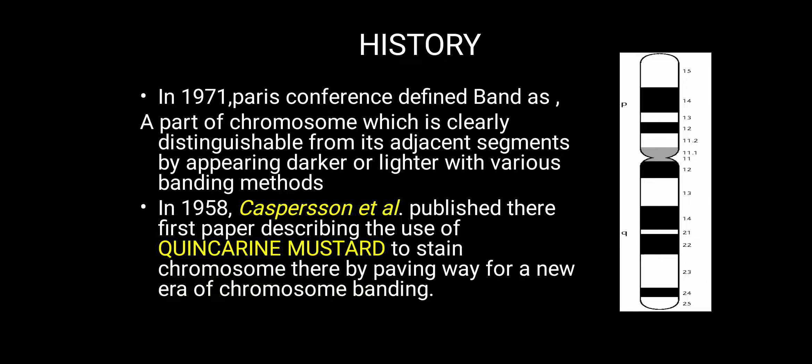Let us see the history of chromosome banding. In 1971, the Paris conference defined a band as a part of a chromosome which is clearly distinguishable from its adjacent segments by appearing darker or lighter with various banding methods.